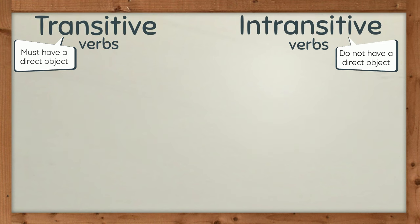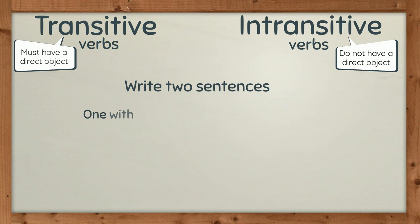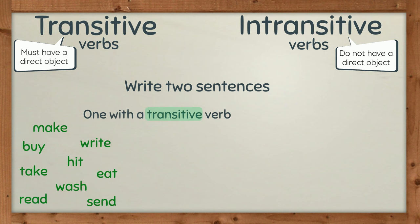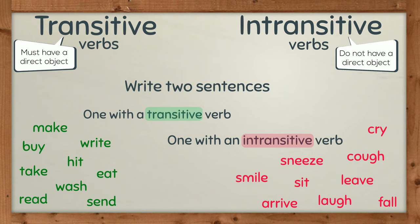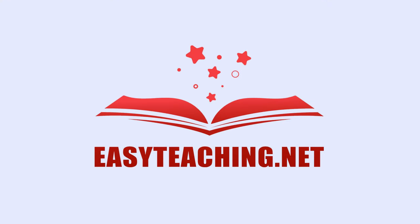As a final activity, write two sentences: one with a transitive verb and one with an intransitive verb. Use the given verbs for ideas. If you like, leave your sentence in the comments section. Easy Teaching dot net.